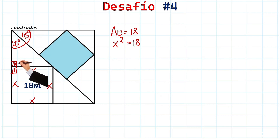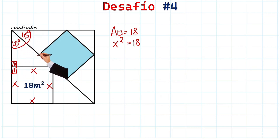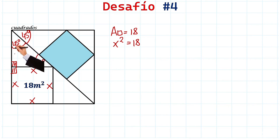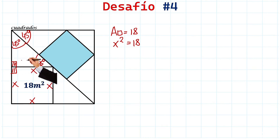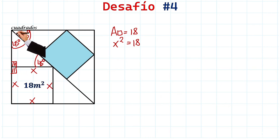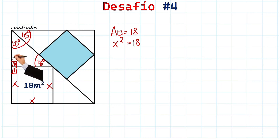So here we also have 45 degrees. We have 90 degrees here and 45 degrees here, which means this angle is also 45 degrees — to complete the 180 degrees that every triangle has. Since this is a 45-45-90 triangle, it's isosceles, so this side also measures x.